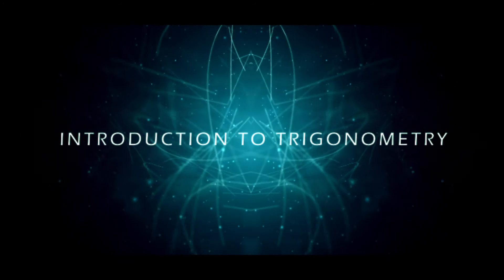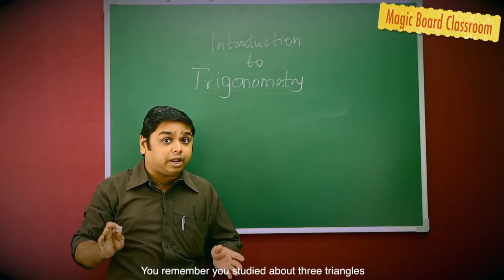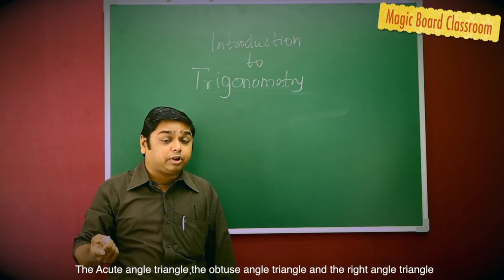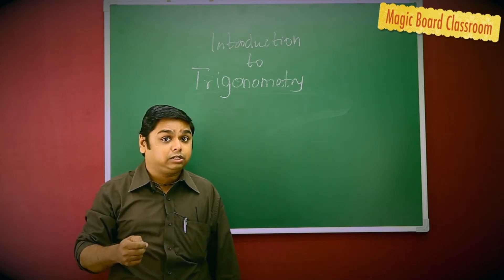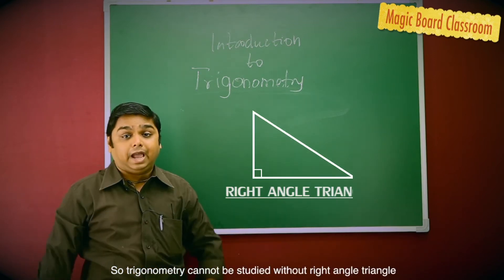Now, students, we cannot study Trigonometry unless or until we study about a right-angled triangle. You remember you studied about three triangles, the acute-angled triangle, the obtuse-angled triangle and the right-angled triangle. So, Trigonometry cannot be studied without the right-angled triangle.